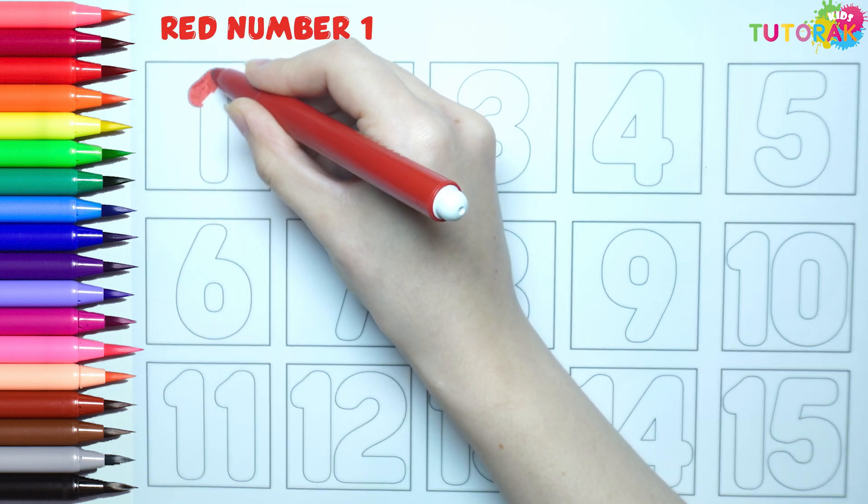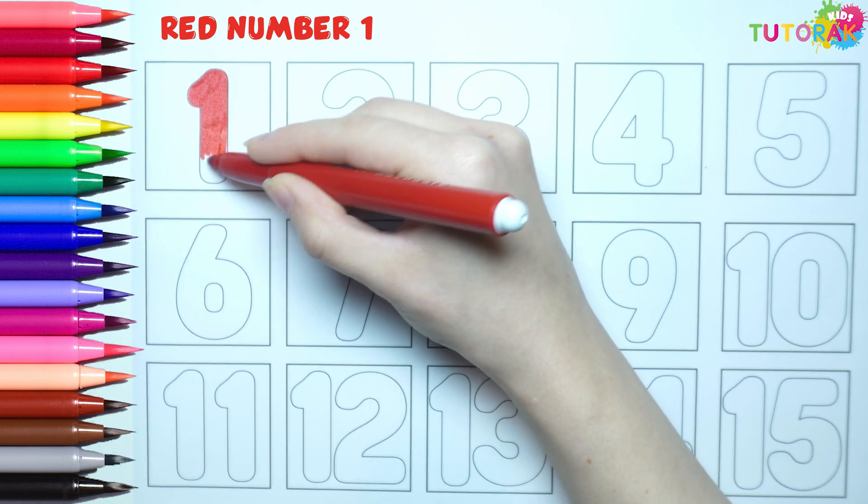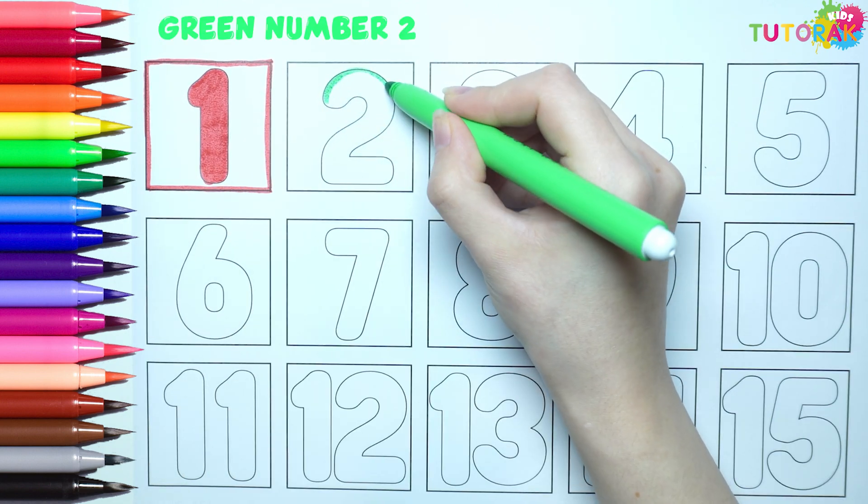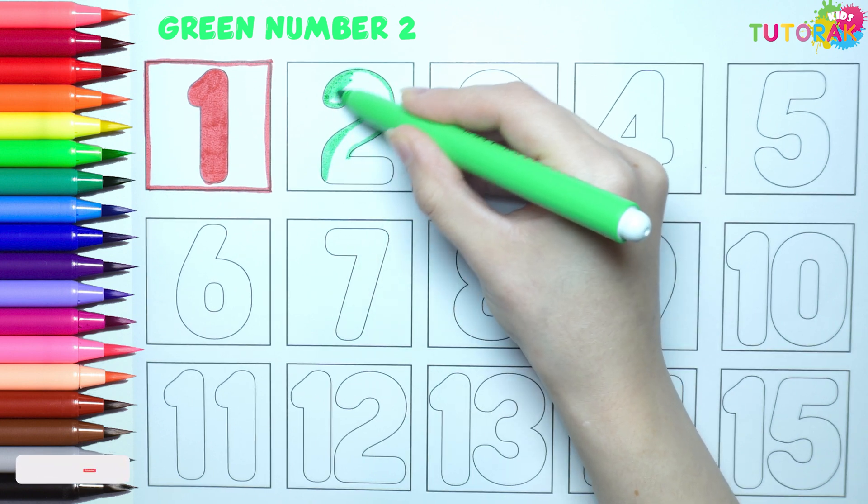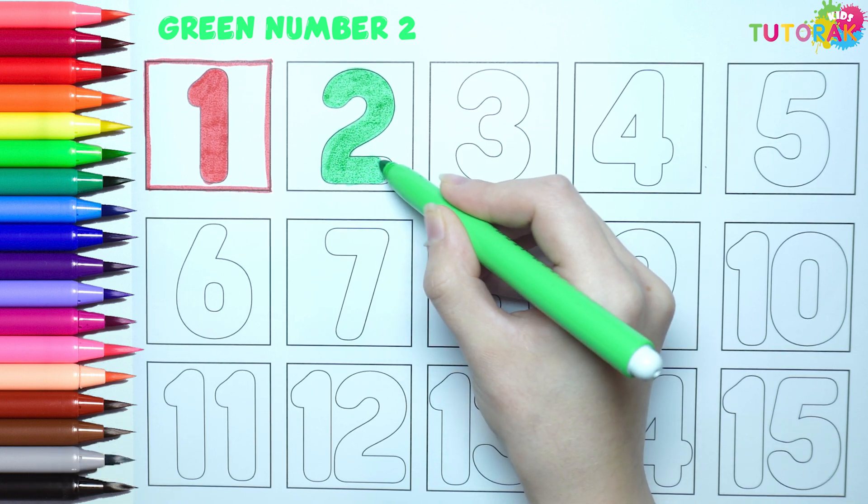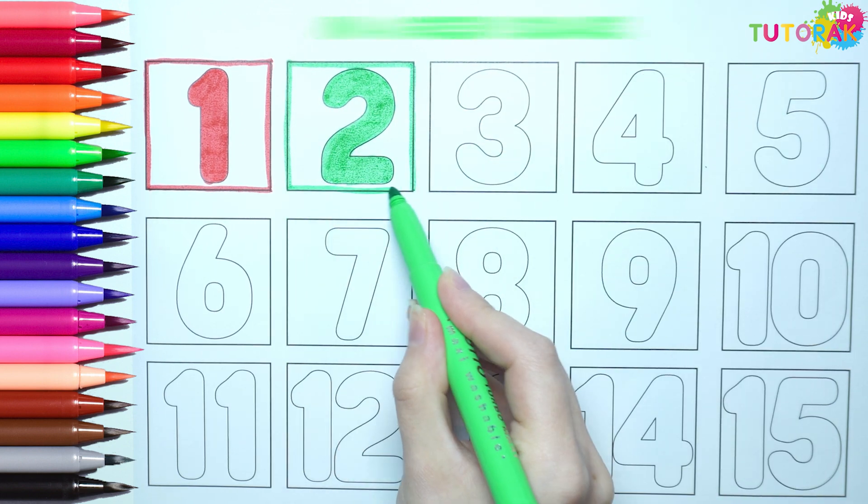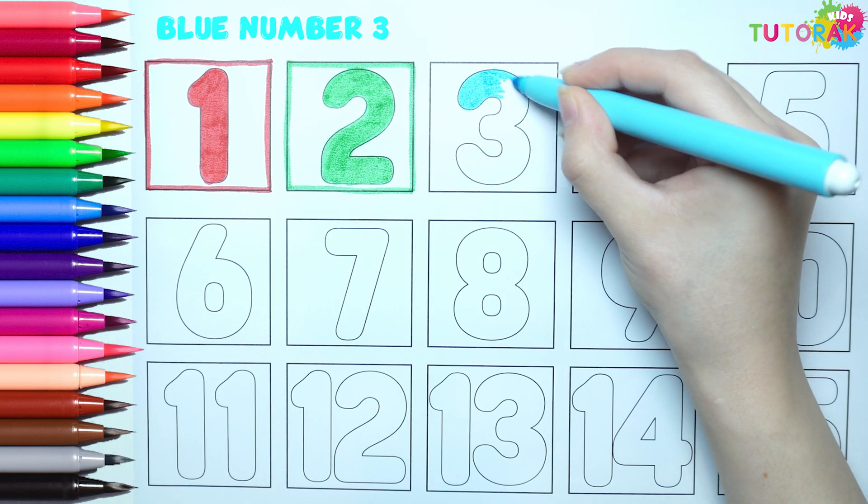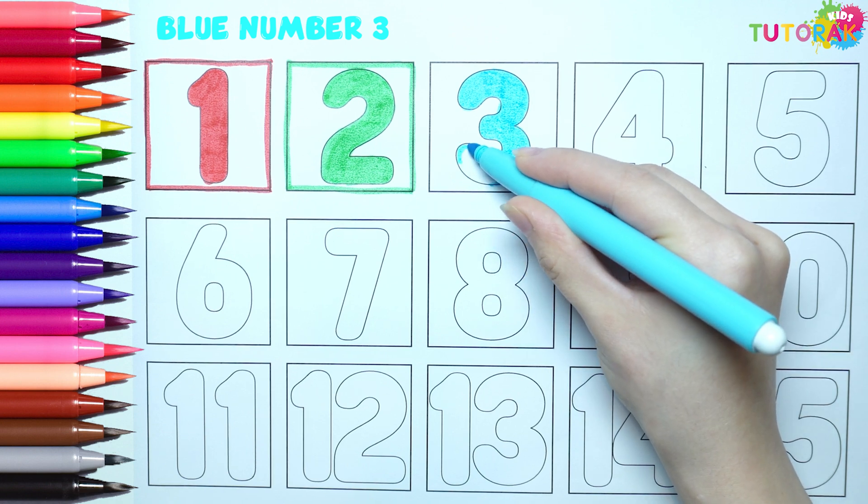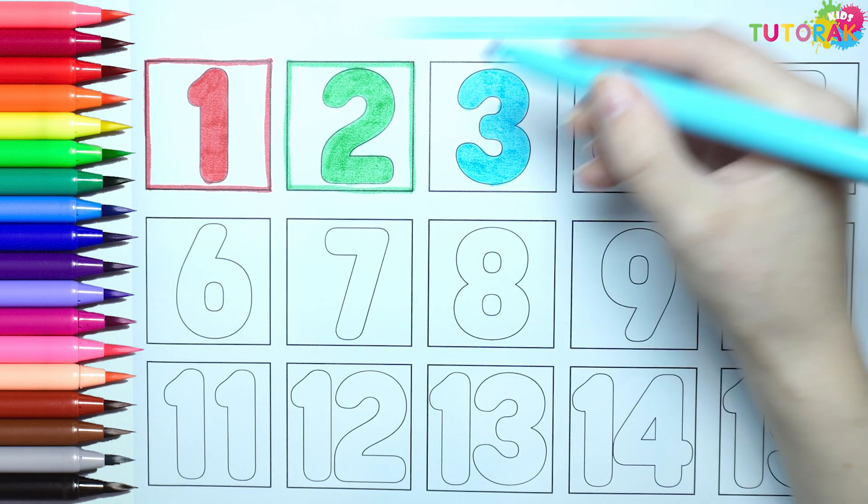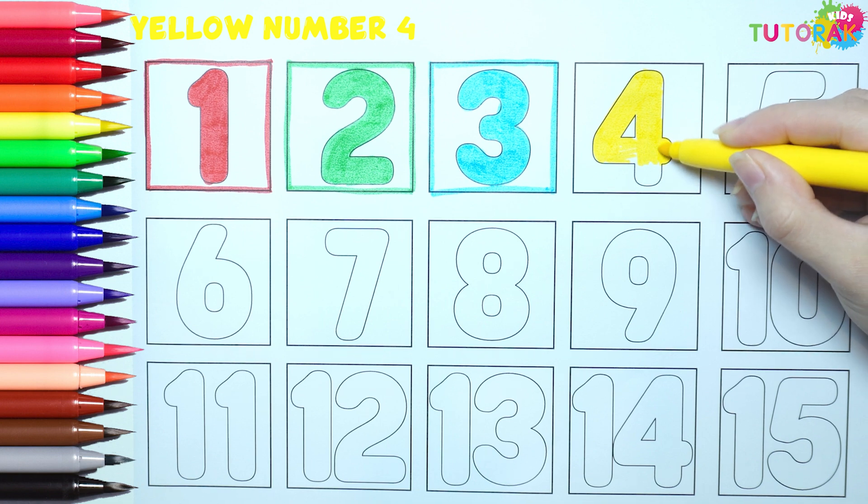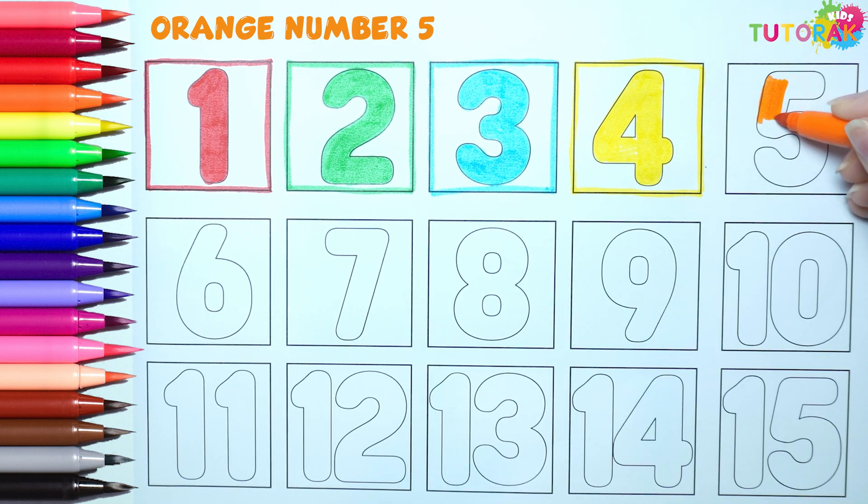Red number 1 in a red square. Green number 2 in a green square. Blue number 3 in a blue square. Yellow number 4 in a yellow square. Orange number 5